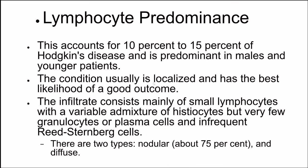The next subtype is lymphocyte predominance. This accounts for 10% to 15% of Hodgkin's disease and is predominant in males and younger patients. The condition is usually localized and has the best likelihood of a good outcome. The infiltrate consists mainly of small lymphocytes with a variable admixture of histiocytes, but very few granulocytes or plasma cells and infrequent Reed-Sternberg cells. There are two types: nodular and diffuse.